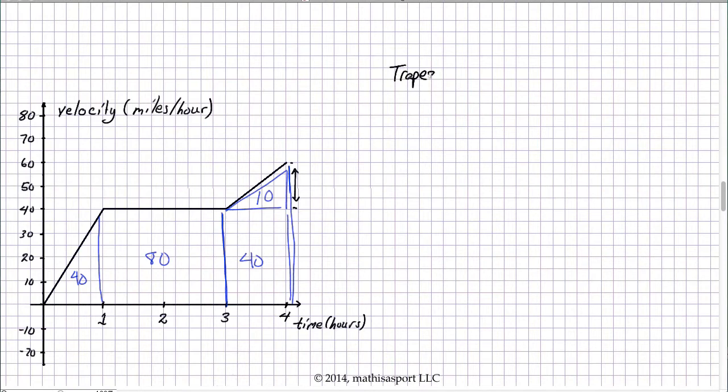So, the trapezoid rule for area is the average of the two parallel sides times the distance between them. Let's just say what that means.